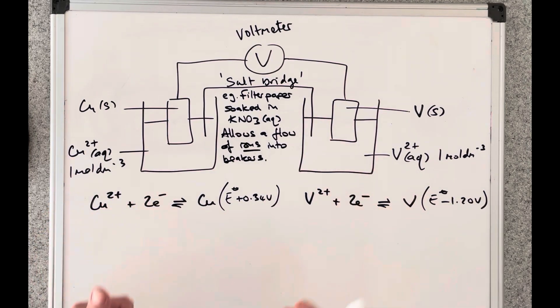So when you put these two half cells together the copper 2 plus ions are going to accept the electrons from the vanadium. So the vanadium is going to be forced to give up its electrons because the copper 2 plus ion is going to accept them.